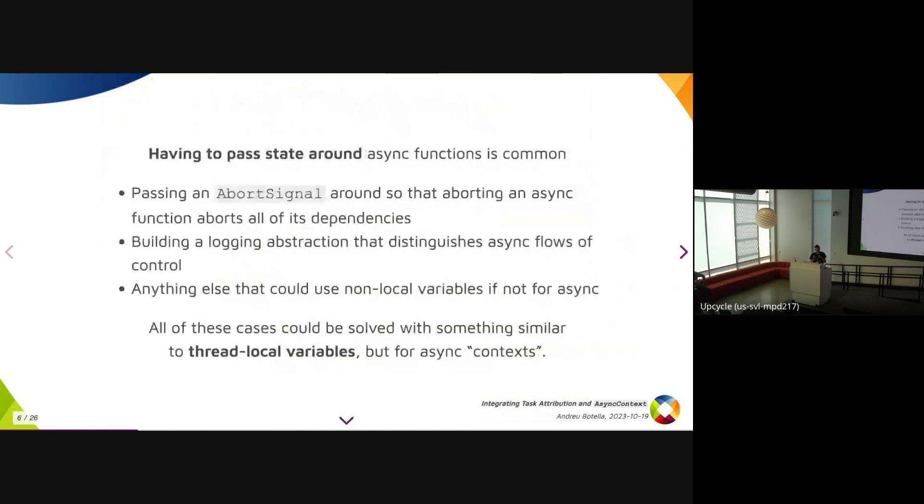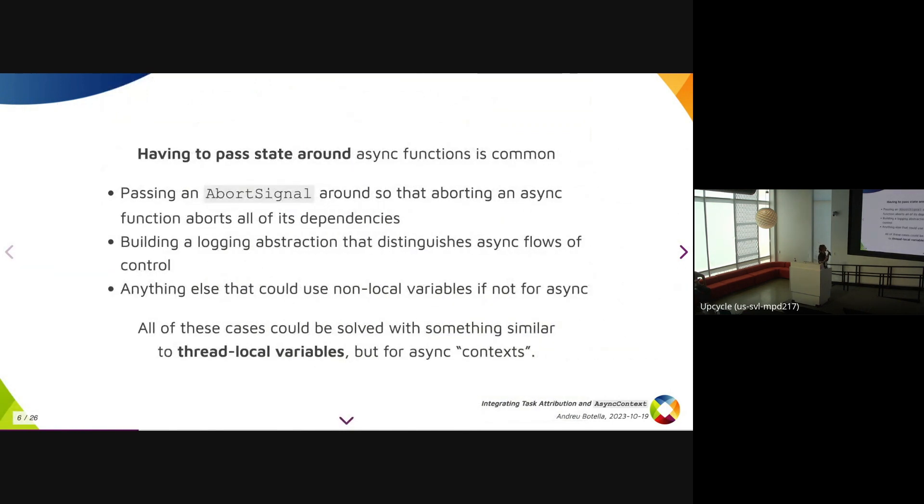So this is a common thing, having to pass state around async functions is common. Some things that you need to do, for example, are passing an abort signal around so that when you abort an async function, you're also aborting all of its dependencies. If you're building maybe a logging extraction that wants to distinguish async flows of control, you have no way to do that other than having the user line code, the user of that API pass that state around. And everything that basically would use non-local variables if it wasn't because it's async. So all of these cases would actually be solved with something similar to thread local variables in C++, except for async context, for async flow of control and so on.